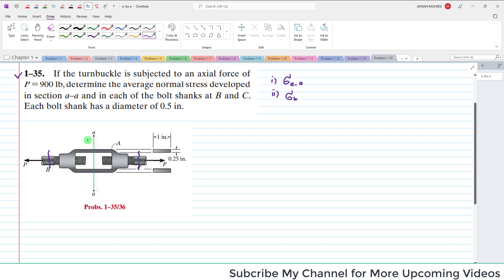You have to find the stress in bolt B or C. The stress in shank at point B and C will be the same, so sigma B is equal to sigma C and you have to find this.